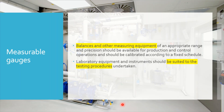Regarding measurable gauges, your process system or equipment will have a number of measuring instruments to gather process information — these can be load cells, pressure gauges, conductivity sensors, or DO probes. Balances and other measuring equipment of appropriate range and precision should be available for production and control operations, and should be calibrated according to a fixed schedule. Laboratory equipment and instruments should also be suitable for the testing procedures undertaken.